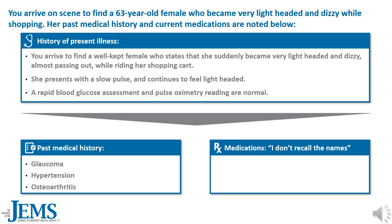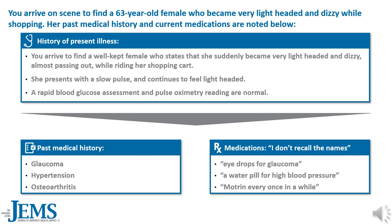When asked about her medications, she said: I don't recall the names. Eye drops for glaucoma, a water pill for high blood pressure, and motion sickness medication every once in a while. You obtain a 12-lead ECG, but before we examine it, let's review our primary survey of interpretation.